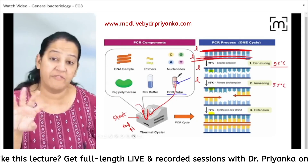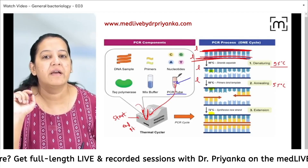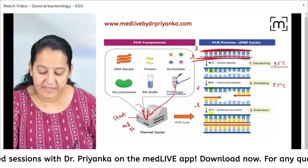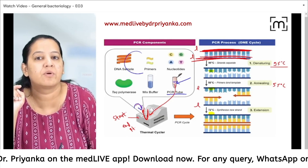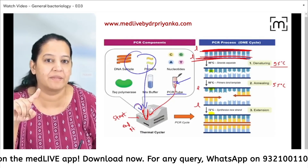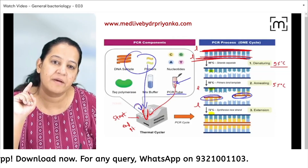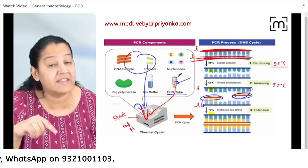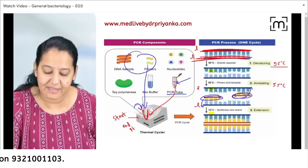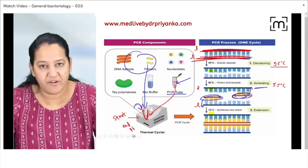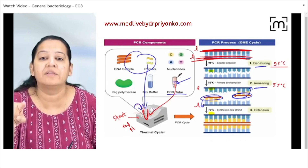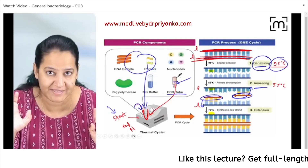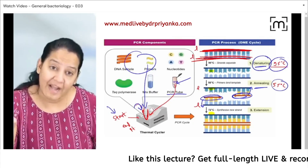After denaturation, the temperature automatically becomes 55°C. The leading and lagging strands are now separated. At 55°C, the primers — which are already present inside the PCR tube along with the sample — will come and bind: one primer binds with the leading strand and one primer binds with the lagging strand. This binding of primers with the leading and lagging strands is known as annealing.